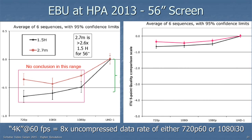This chart was first shown by the European Broadcasting Union at the Hollywood Post Alliance Tech Retreat in 2013. It shows the perceptual improvement in pictures for going from HD to 4K at two distances. The black line is at one and a half times the picture height — for a 56-inch screen, about 40 inches away, really really close. The red line is at 2.7 meters, roughly nine feet, a typical home viewing distance. At nine feet the improvement is maybe a third of a grade, and at 40 inches the improvement is maybe half a grade. Getting from typical HD up to 4K requires an eightfold increase in uncompressed data rate — so 16 times the data for roughly one grade of improvement.